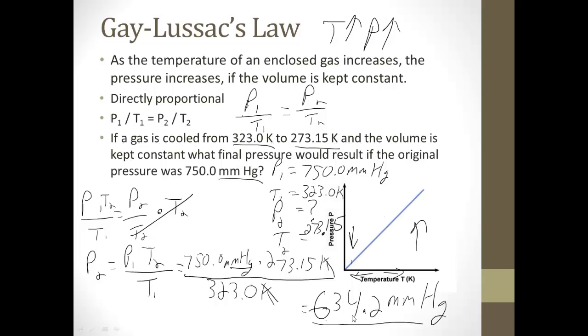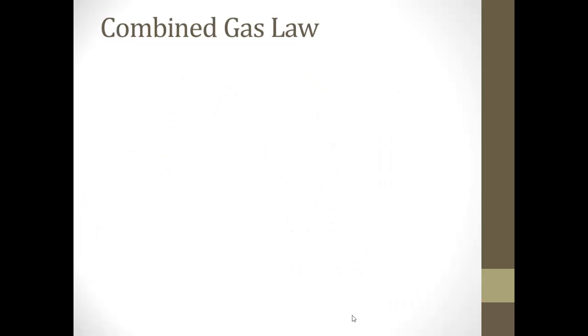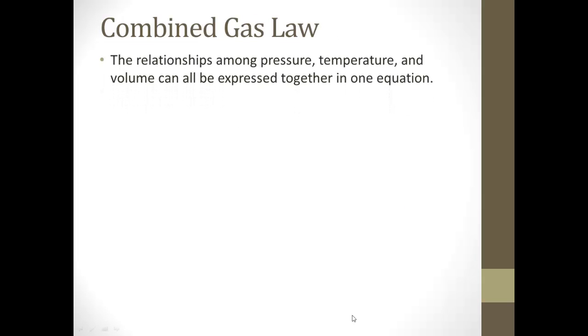So it's equal to 634.2 millimeters of mercury. Now let's think, the gas was cooled, so the temperature went down, so my pressure went down, and that makes sense. You're not going to really have to use those laws specifically by themselves, because what we're going to do in Regents Chemistry is utilize what's called the combined gas law. The combined gas law is where the relationship among pressure, temperature, and volume can all be expressed together in one equation. And this formula is P1V1 over T1 is equal to P2V2 over T2, and you don't even have to memorize it because it's on the reference table.